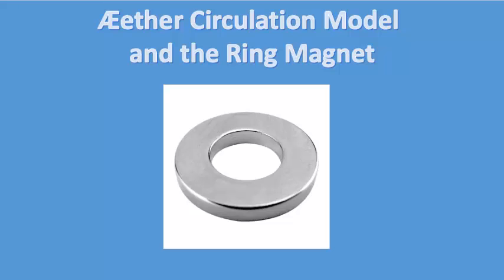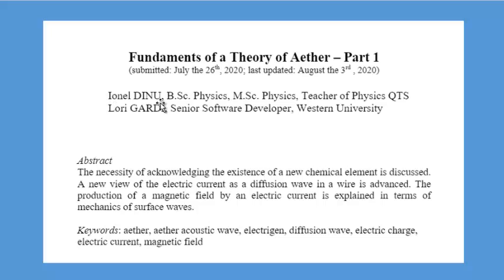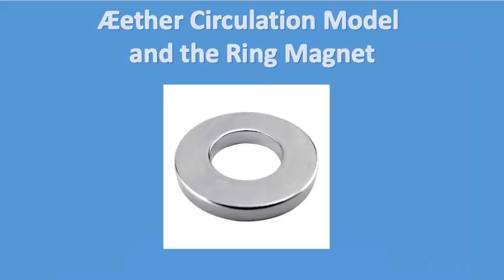Today I'm going to talk about the Ether Circulation Model as it relates to the ring magnet. Before I do that, I want to make sure I give credit where credit is due. The Ether Circulation Model is a term that I more recently started using after working with Yonel Dinyu on his Fundamentals of Ether Theory research. I developed the software to bring his model to life. This is not a term that he uses — this is a term that I use.